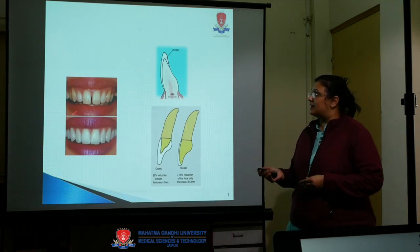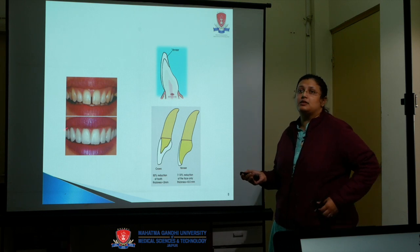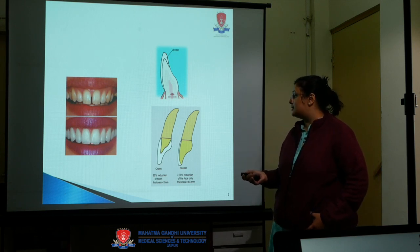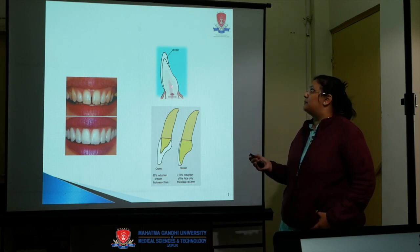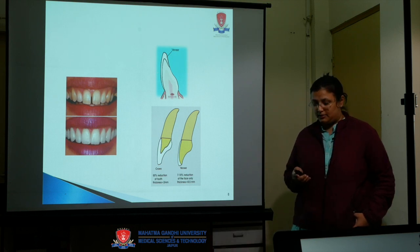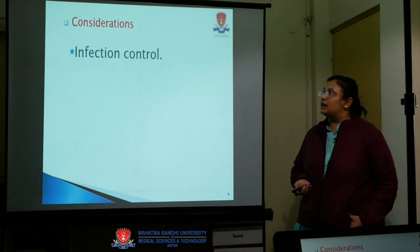For example, aesthetic correction where there is diastema spacing — we do this by veneers. A veneer is a thin layer of material that we apply on the tooth.